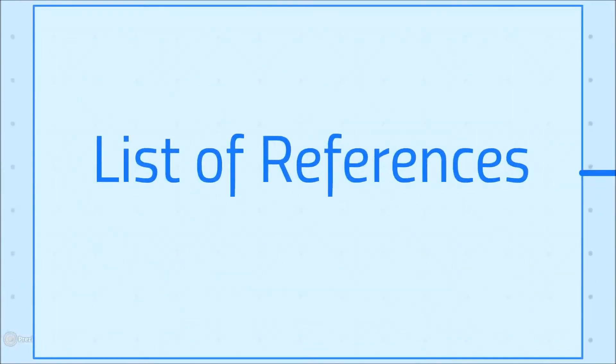The slightly more complicated part of referencing a book is the list of references at the end of your work. This requires slightly more information, but unlike in-text citations, they are the same every time.